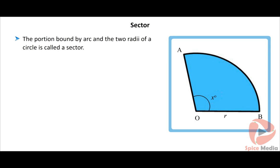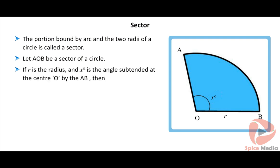A sector is the portion bound by an arc and the two radii of a circle. Consider the following figure: let AOB be a sector of a circle. If R is the radius and x degrees is the angle subtended at the center by arc AB, then the length of the arc is equal to (x/360) × 2πR units.